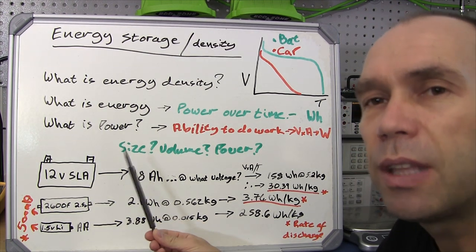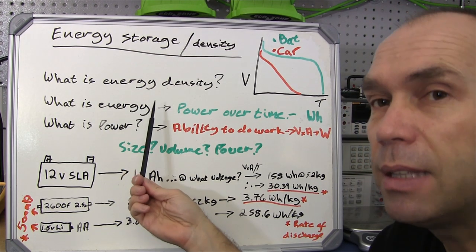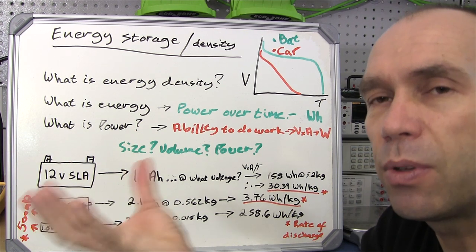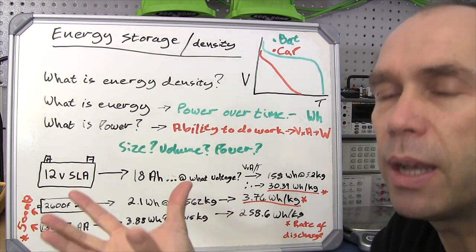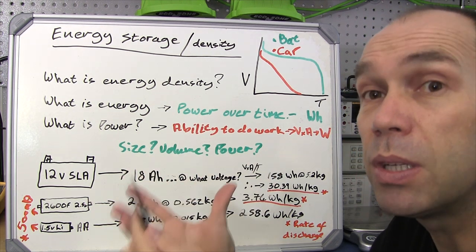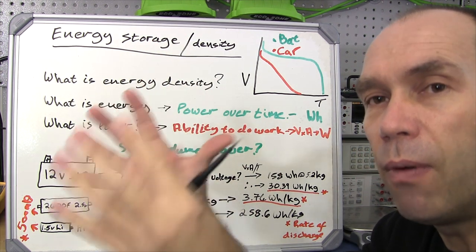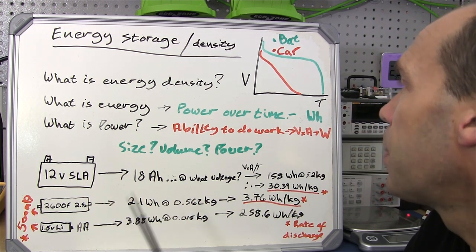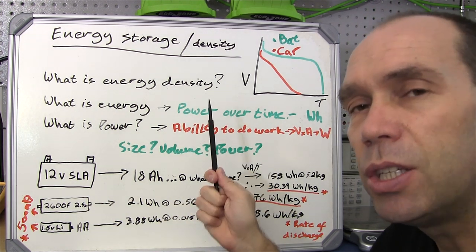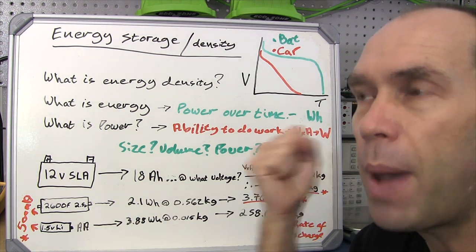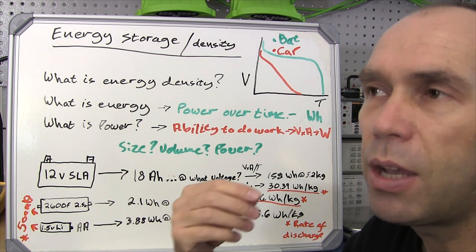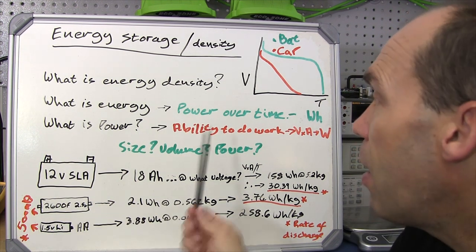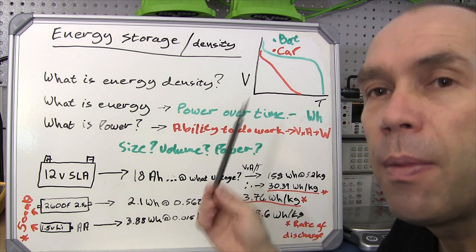Before we move on, there are other interesting things related to energy. We're talking about density, but another thing you could be interested in is size or volume — you could want to know the actual volume your energy storage device takes up rather than just its mass. That's not covered here, but you can work out energy per volume as opposed to per weight. Also, you may be more interested in the power that can be delivered — for instance wanting 50 watts to drive something — and you can work out power density as well, but that's another topic.